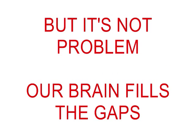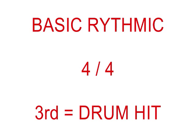However, this is not a real problem. Watch and listen carefully to find out why. A basic rhythmic can be seen as four units of time, all equal, where the third unit time is used for the important drum hit.